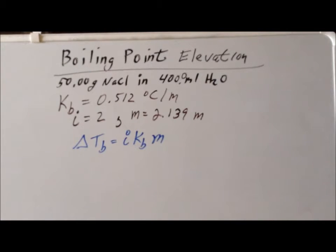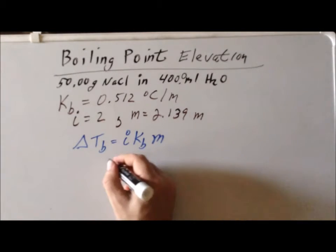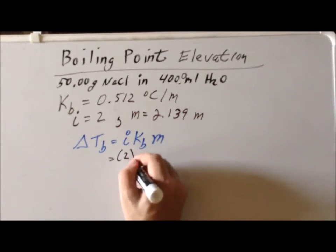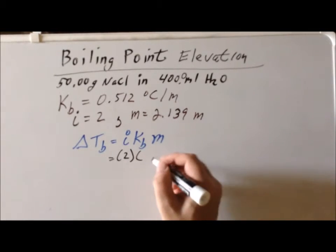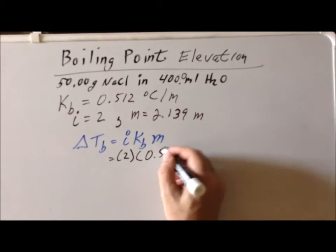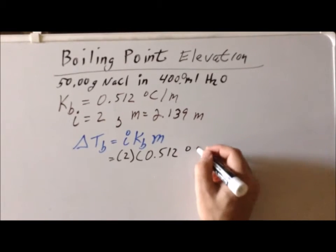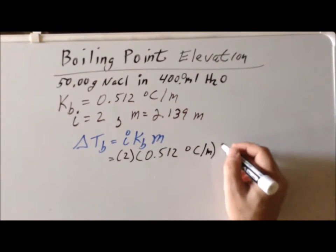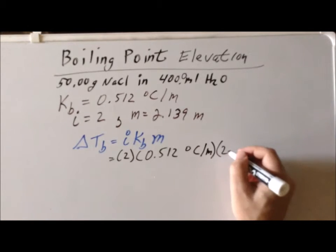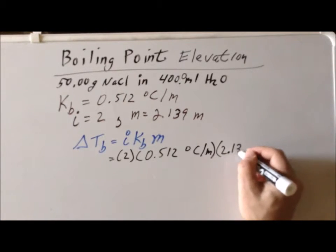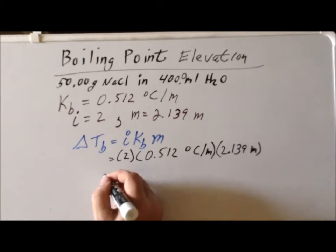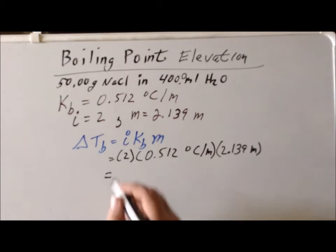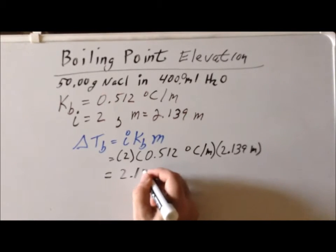Now it's a matter of plugging and chugging: 2, the Van't Hoff factor, which is a unitless quantity, times 0.512 degrees Celsius divided by molality, the ebuloscopic constant, and then we multiply it by the molality, which is 2.139 molal. Once we perform that calculation, we get a value of 2.19 degrees Celsius.